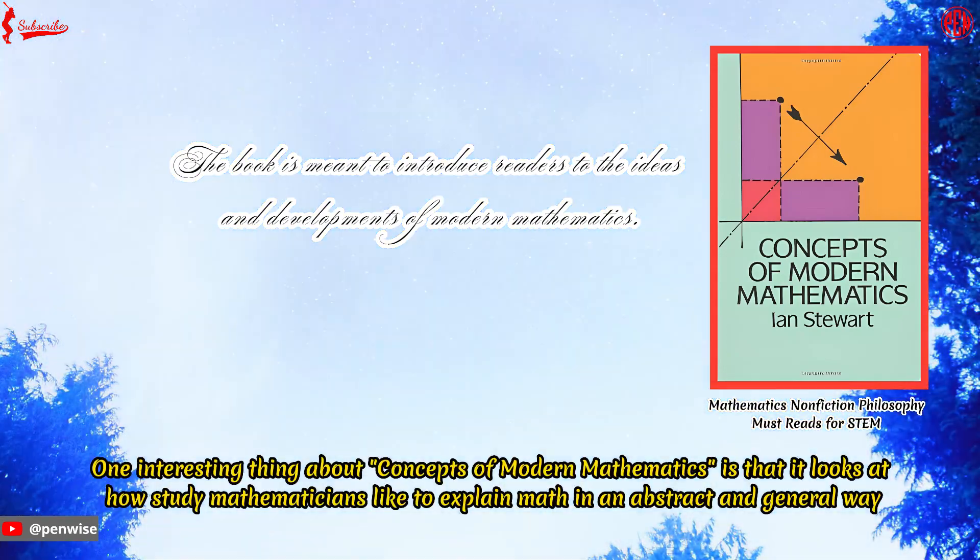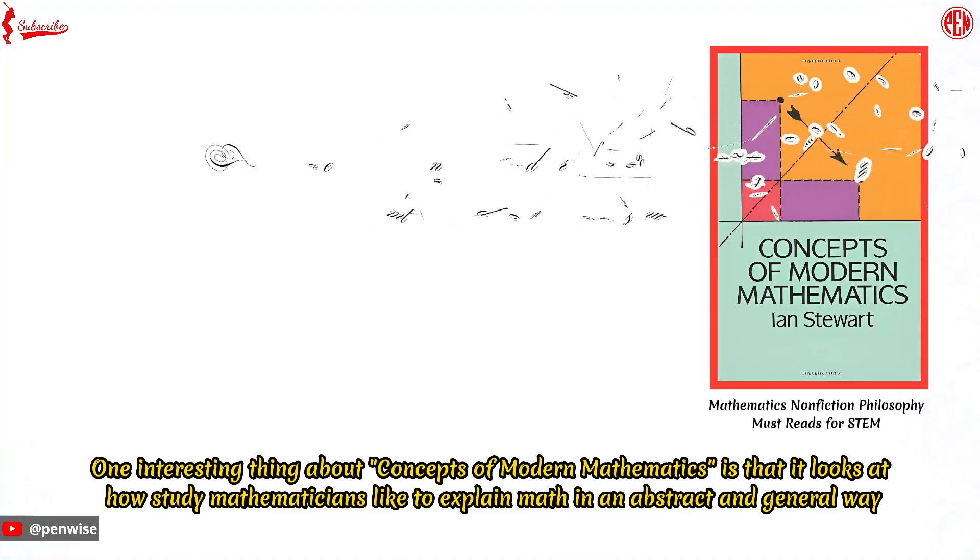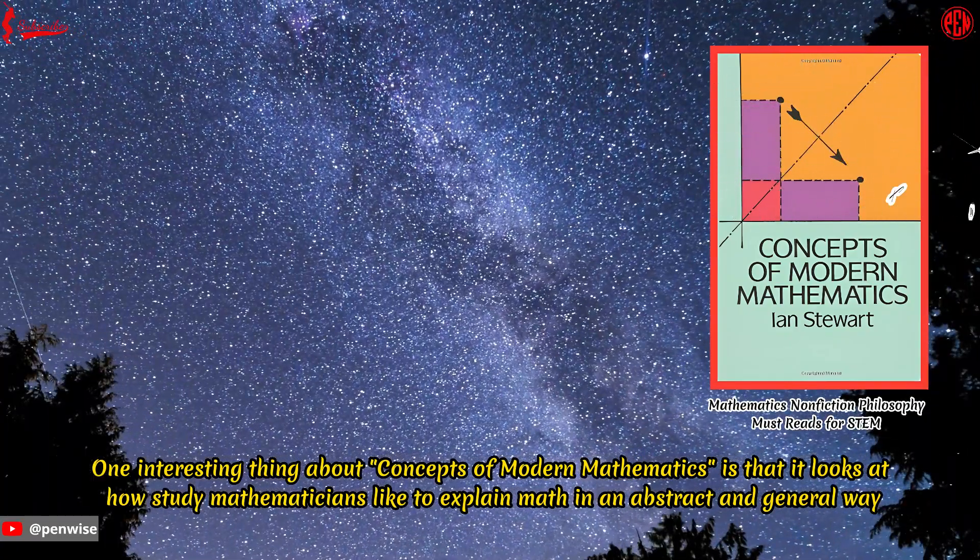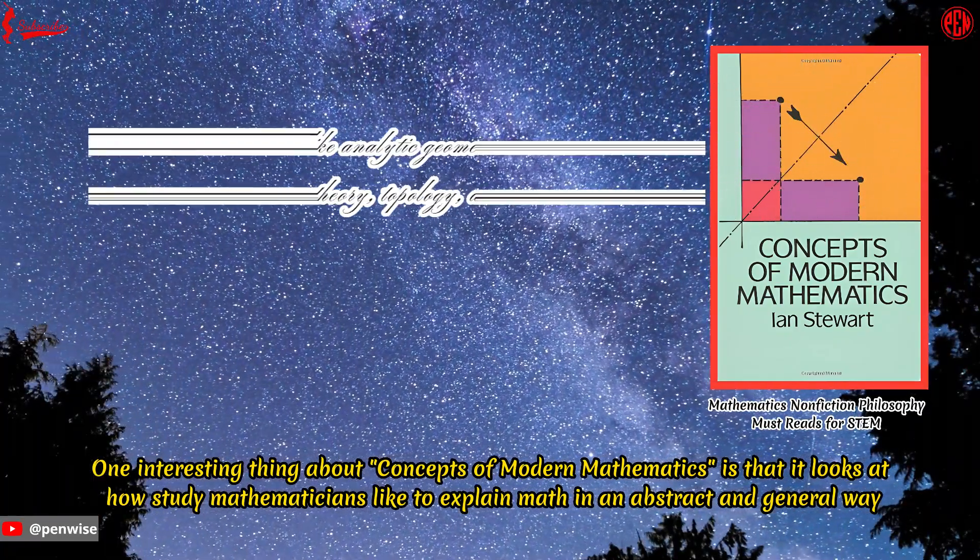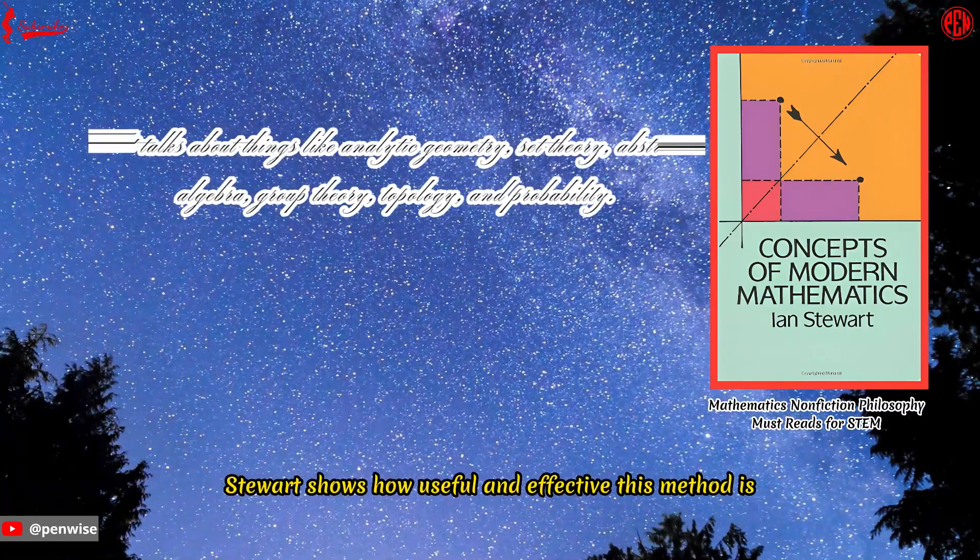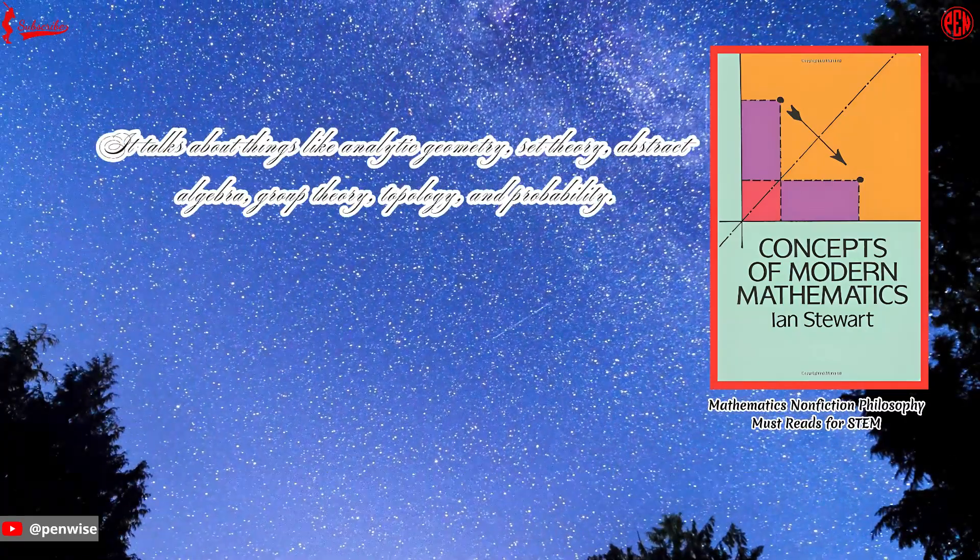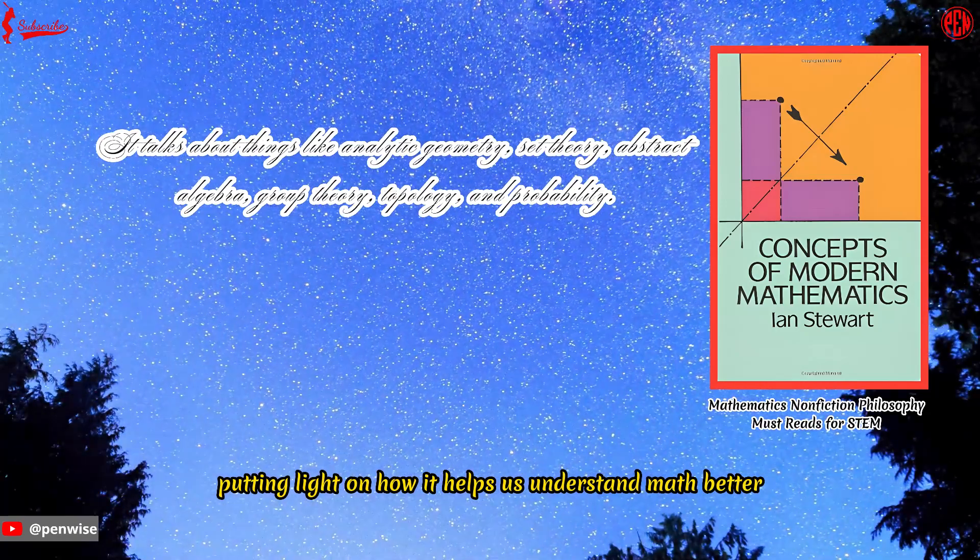One interesting thing about Concepts of Modern Mathematics is that it looks at how mathematicians like to explain math in an abstract and general way. Stewart shows how useful and effective this method is, shedding light on how it helps us understand math better.